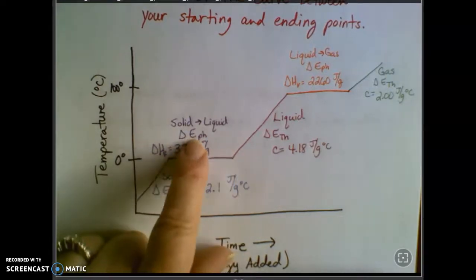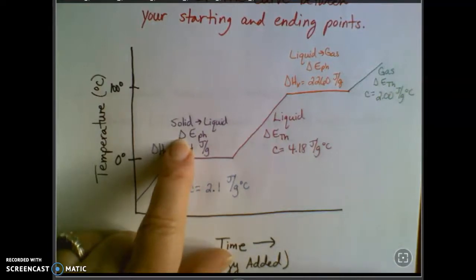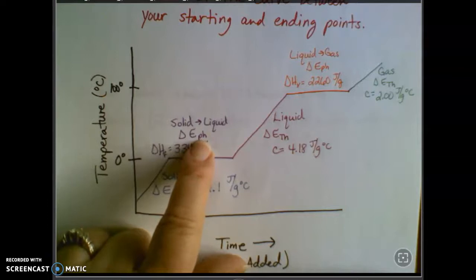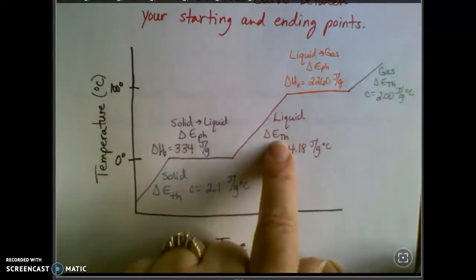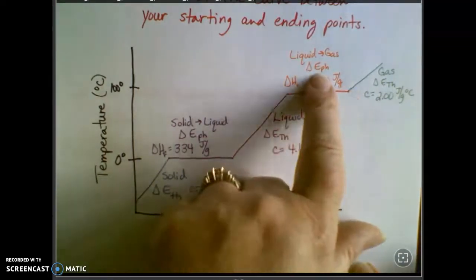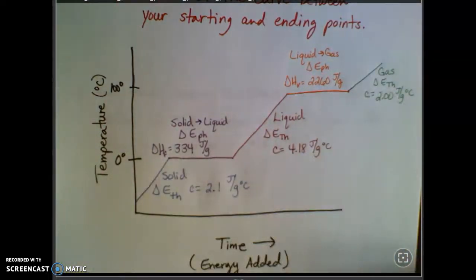On the flat parts, the state of matter or the phase is changing, or the interaction energy. So we've been calling that EPH. This little triangle here just means a change, call it delta. So this is a change in phase energy or interaction energy. We've got another slope, which means it's a temperature change. We have another flat part, which means it's a phase change. And then finally we have another slope, which means a temperature change.